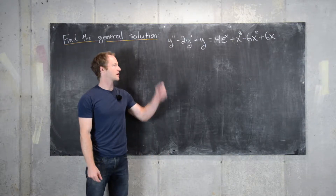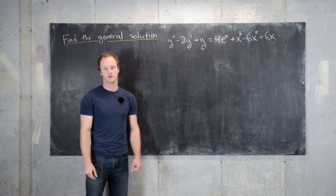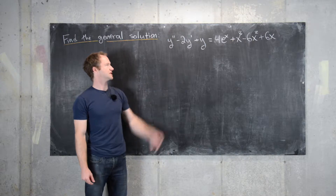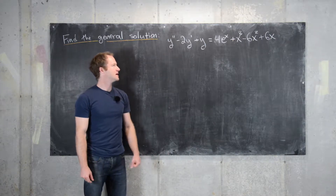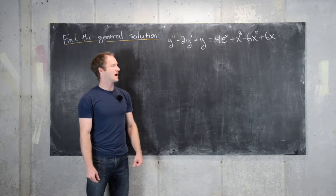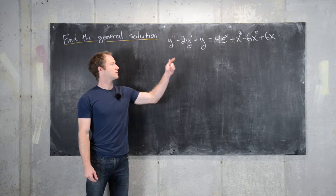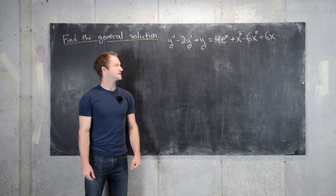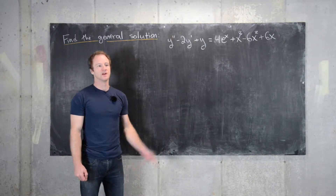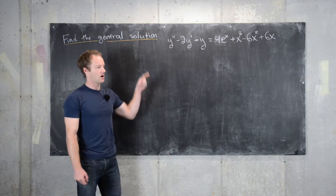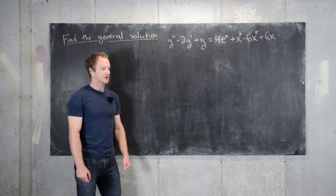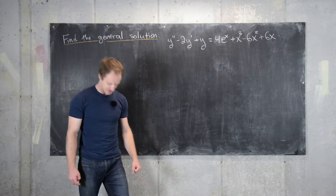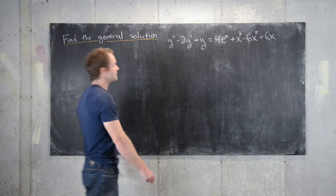In this video we're going to look at the following second-order differential equation. It's non-homogeneous: y'' - 2y' + y = 4e^x + x³ - 6x² + 6x. For all differential equations of this form, it's important to first find the homogeneous solution.